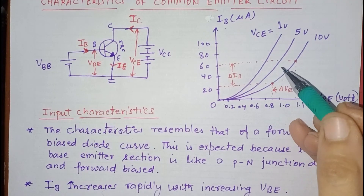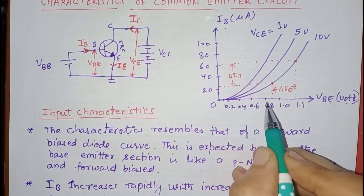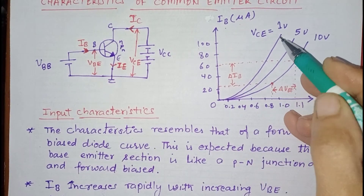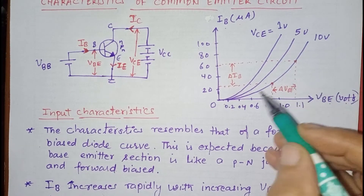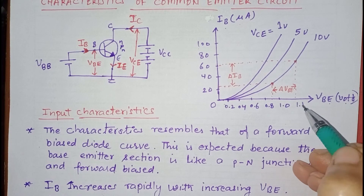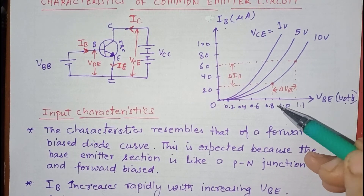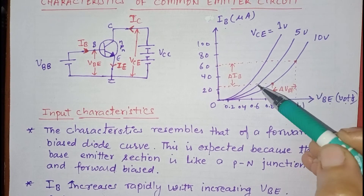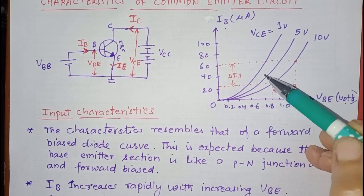When we increase the base-emitter voltage, the current rises rapidly, but this rise is less steep in the CE configuration compared to the CB configuration. That is why the input resistance of the common emitter configuration is higher than that of the common base configuration.